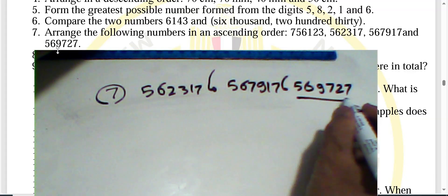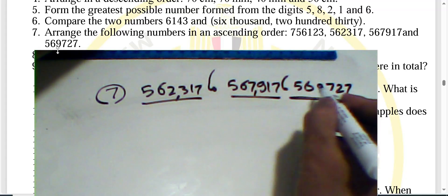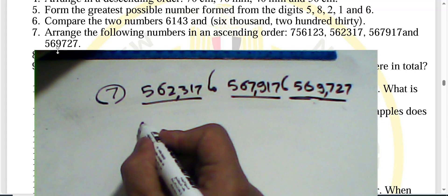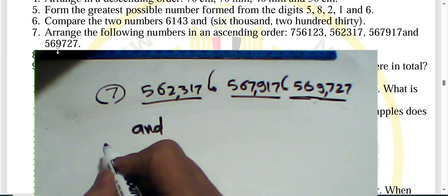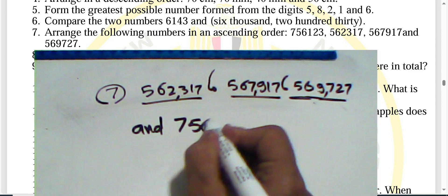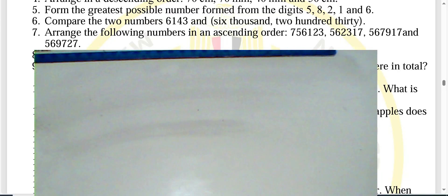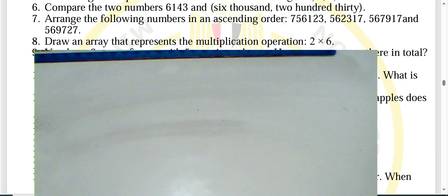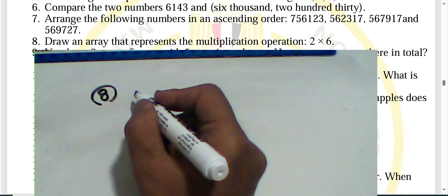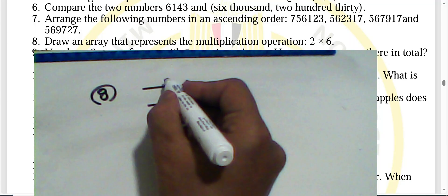Continuing the ascending order, we also have numbers with six digits. The next in sequence is 756,123, placing larger values last.